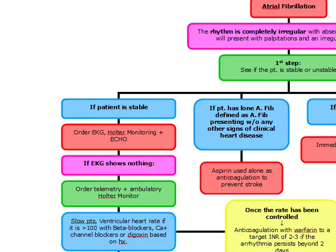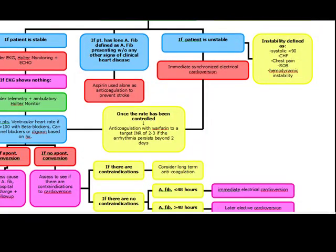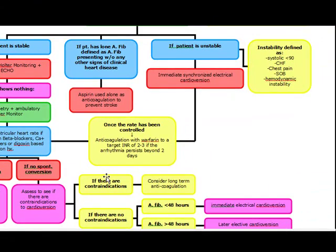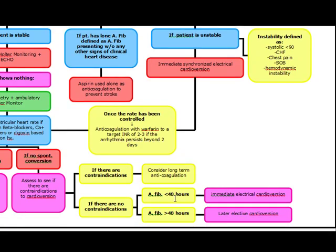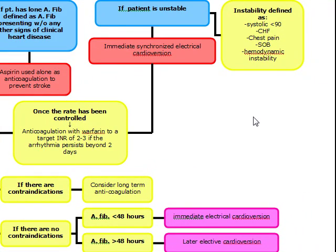To summarize: in AFib, the first thing is to assess if the patient is stable or unstable. If stable, order EKG, Holter, and echo. If the EKG shows nothing, order telemetry and an ambulatory Holter monitor. If the heart rate is over 100, rate-control with medications based on history — if asthmatic, avoid beta blockers. If there is spontaneous conversion, assess the cause, discharge and follow up. If no conversion, look at contraindications and consider anticoagulant therapy. No contraindications with AFib over 48 hours means elective cardioversion; within the 48-hour window means immediate electrical cardioversion. For both stable and unstable patients, once the rate is controlled, anticoagulate with warfarin to an INR of 2 to 3 if the arrhythmia persists beyond 2 days.